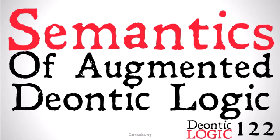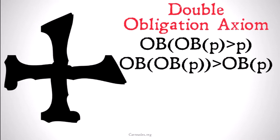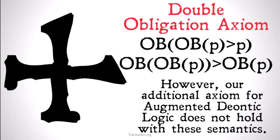The semantics of augmented deontic logic is a concept that took me a while to wrap my head around and to put into a way that would be easy for others to understand, and we're only going to add to those complications as we go further. With that said, remember that augmented deontic logic includes the DOA — the double obligation axiom. However, our additional axiom for augmented deontic logic doesn't hold with the semantics we looked at last time for standard deontic logic, so we're looking at a new kind of semantics.